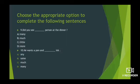Now see the next sentence: 'Did you see dash person at the dinner?' And your options are: many, much, little, more. So the correct option is: did you see many persons at the dinner? A option is the correct option.